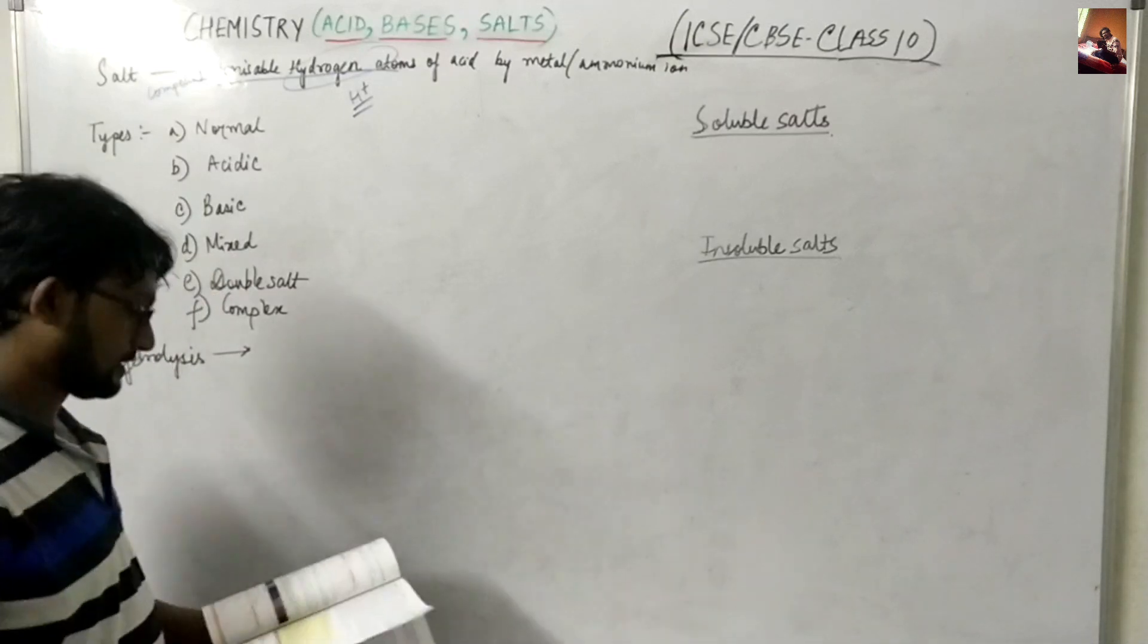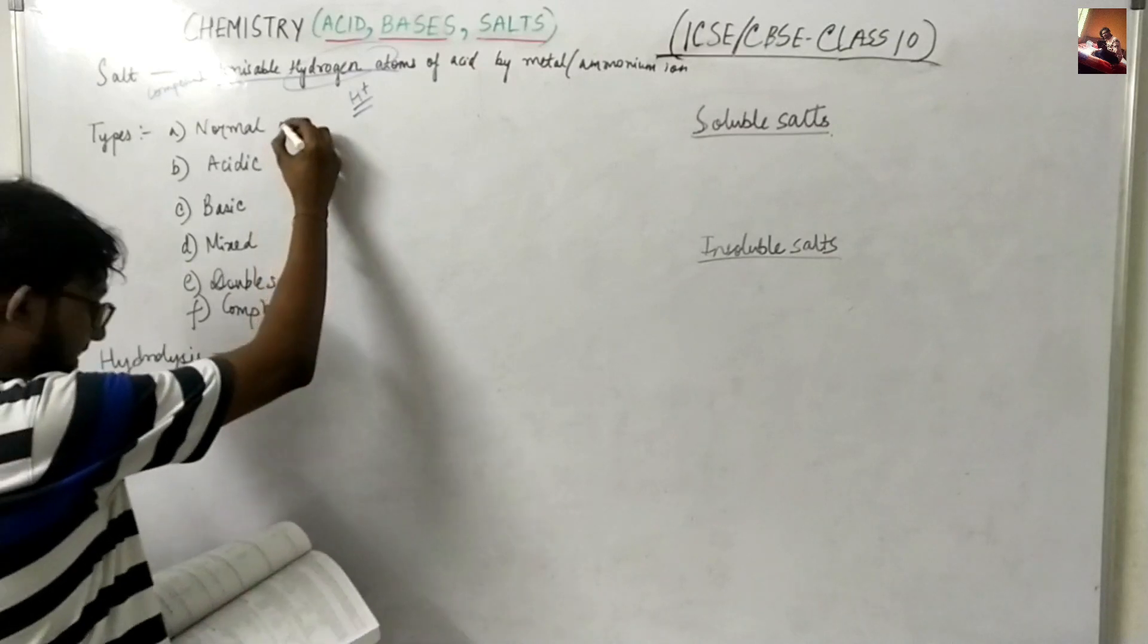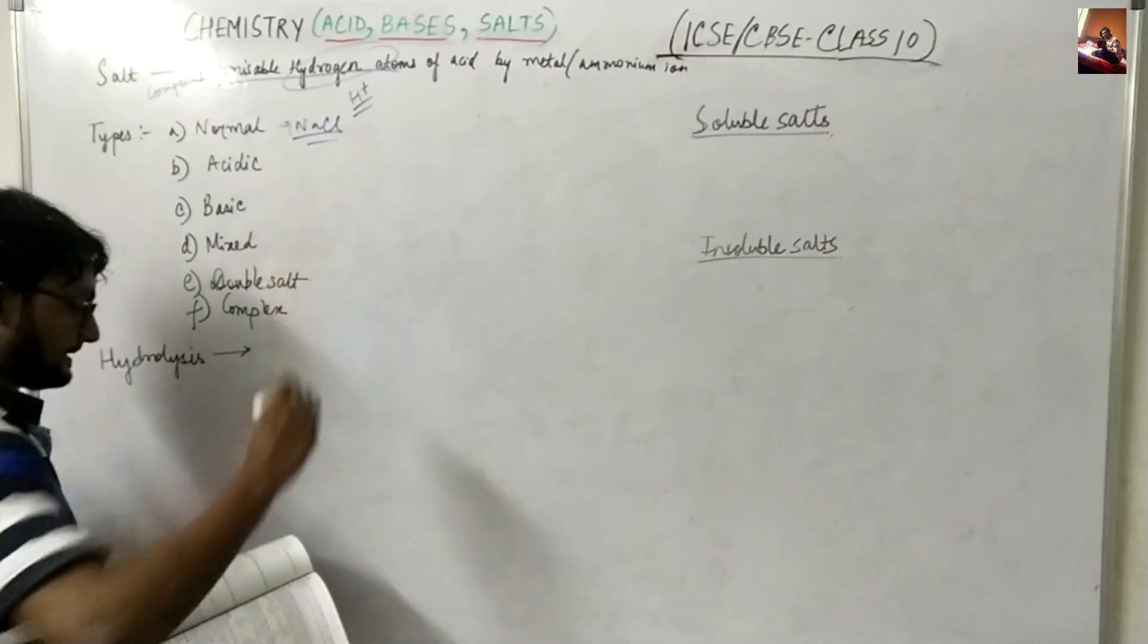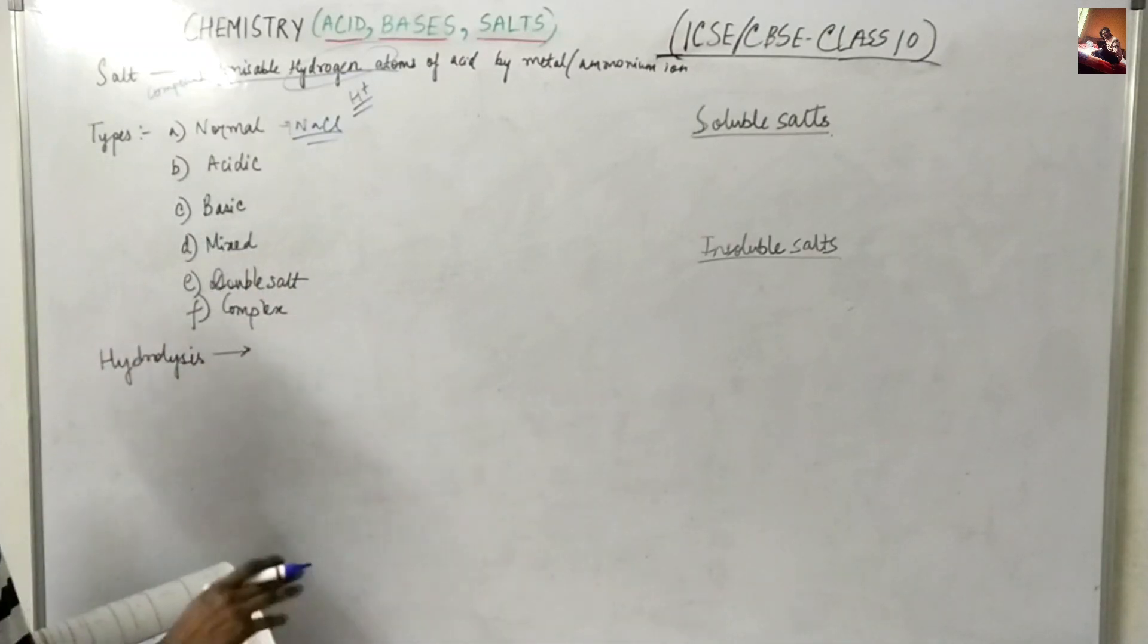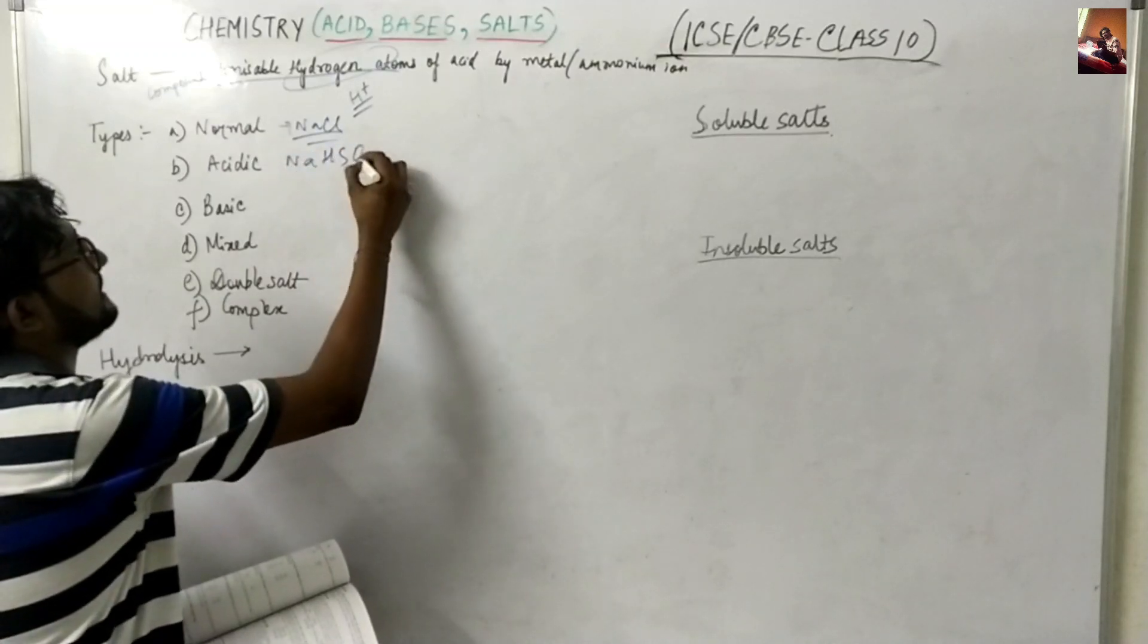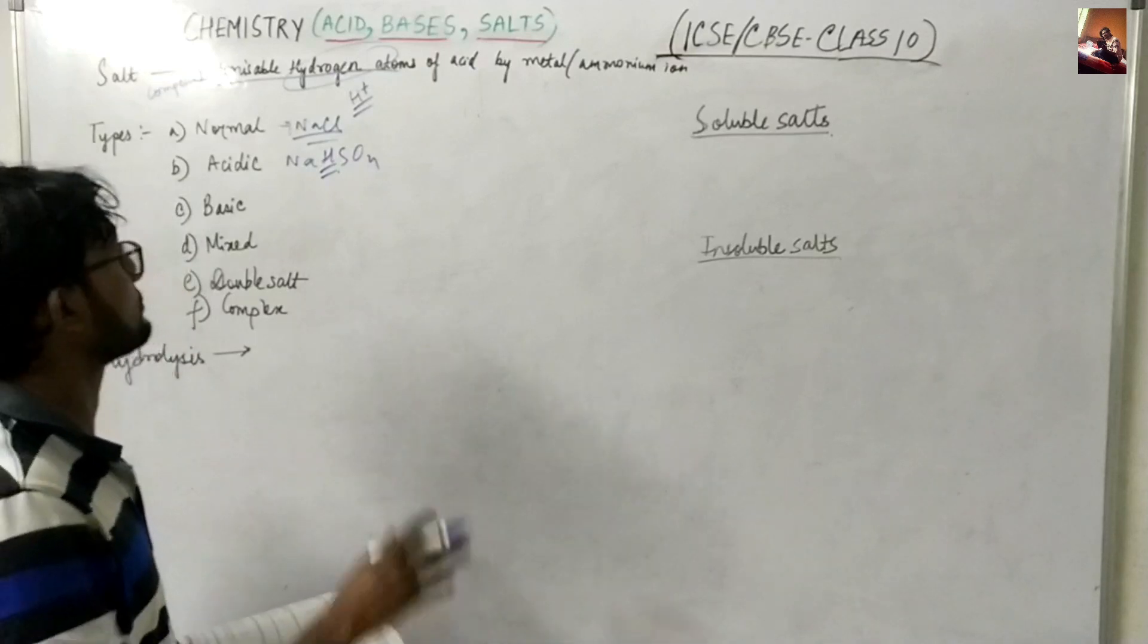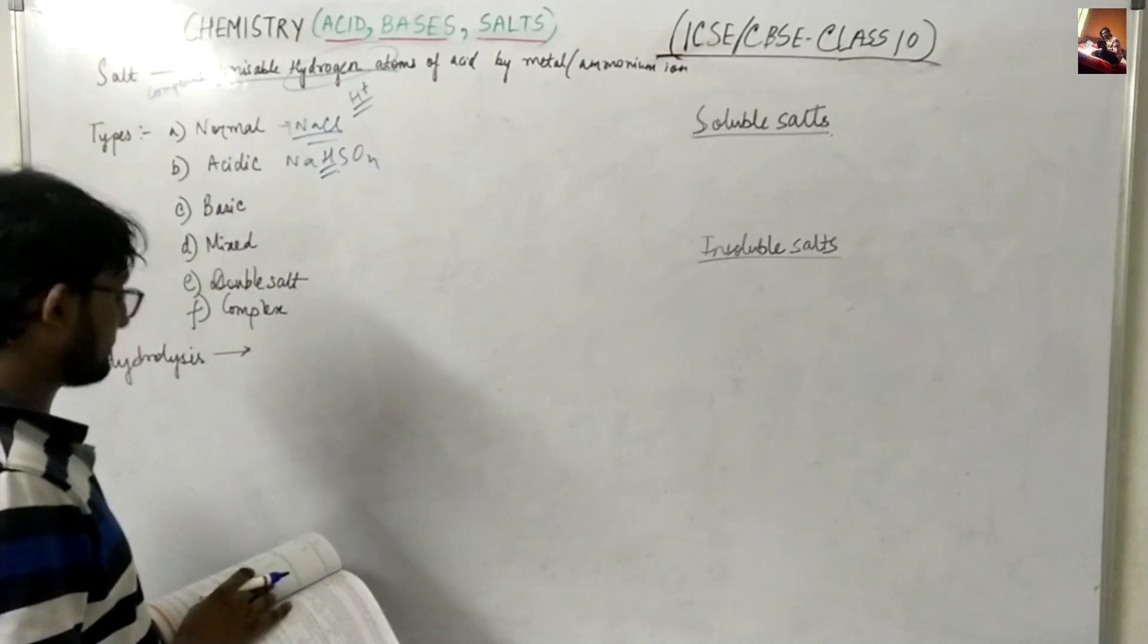So what are the types of salt like normal salt which are formed by complete replacement NaCl. So like for example HCl plus NaOH gives NaCl plus H2O and in case of acidic NaHSO4 so like one hydrogen atom is still yet to be replaced so partial is called acidic.